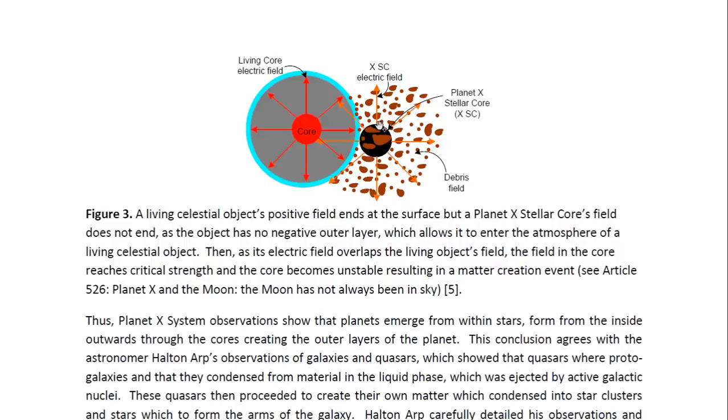But it still retains a strong electric field. But this electric field does not end. It continues right through space. And so it overlaps the Earth's own internal electric field. And that means that it produces a very strong electric field close to the core. And that then makes the core unstable.